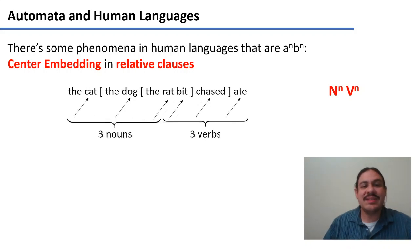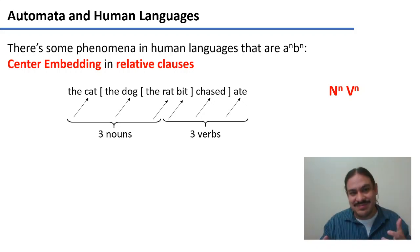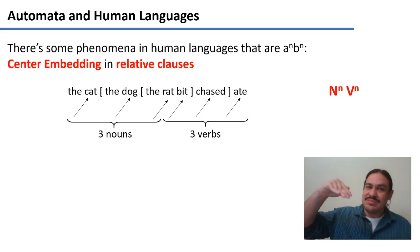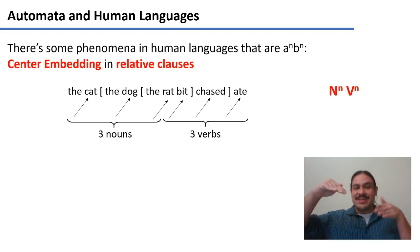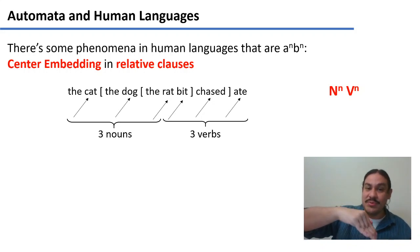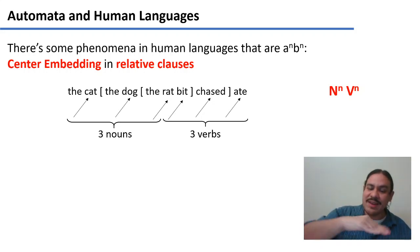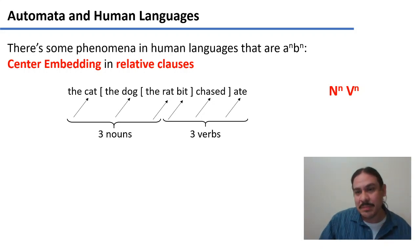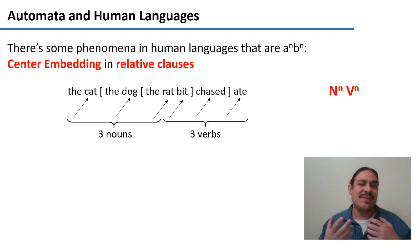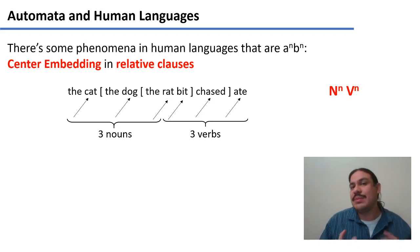This is the same with 'the cat the dog the rat bit chased ate': three nouns go in — the cat, the dog, the rat — and then it needs to come out with three verbs: bit, chased, ate. It would need to record somewhere that it entered with three nouns so that it can produce three verbs going out. It would need to remember previous states as it's going through. Finite state machines cannot look back, and therefore they cannot model this.